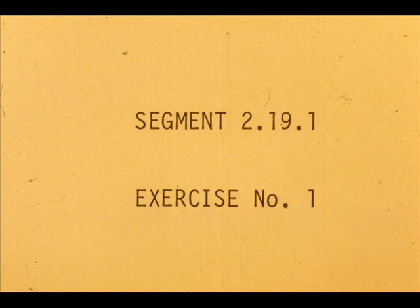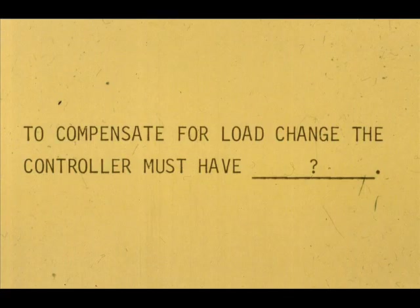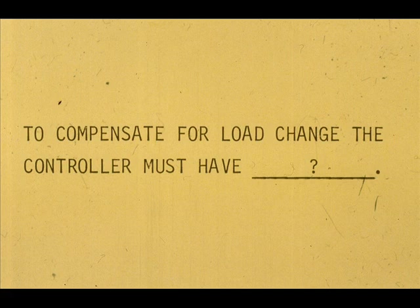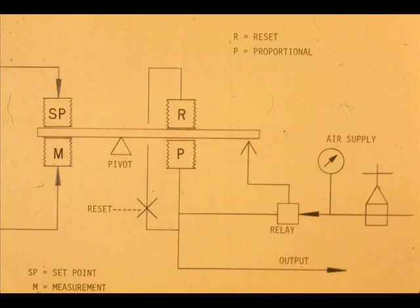Now work exercise one in your workbook. To compensate for offset caused by a load change and bring the control point back to the set point, the controller must have reset or integral action. Mechanically, the reset adjustment allows the reset pressure to balance with the proportional pressure, whether the pressure is psi for pneumatic or voltage for the electronic controller.